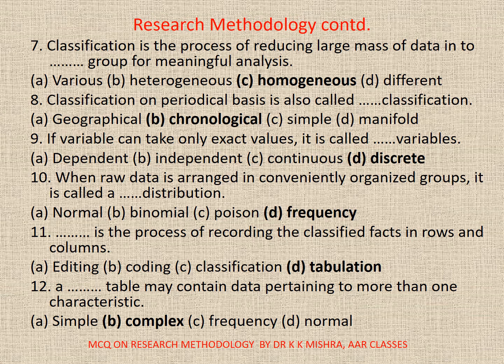Question 10: When raw data is arranged in conveniently organized rows, it is called a dash distribution. A. Normal. B. Binomial. C. Poisson. D. Frequency. Correct option is D. Frequency.